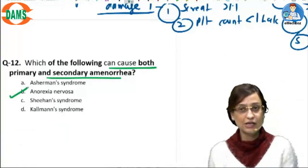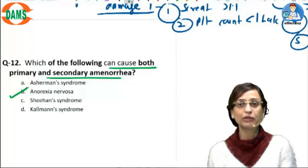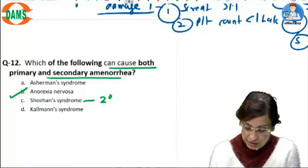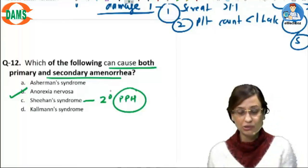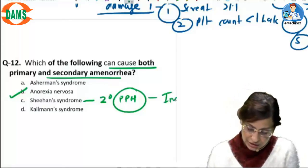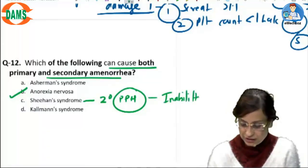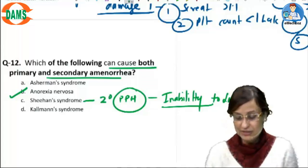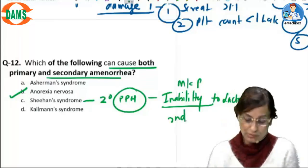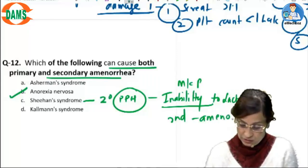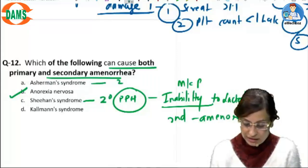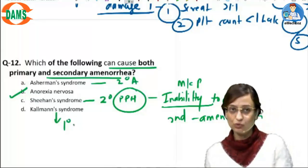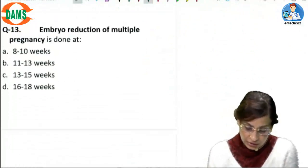Regarding causes of both primary and secondary amenorrhea — the answer is anorexia nervosa. Sheehan's syndrome usually causes secondary amenorrhea; the classic history is a patient with massive postpartum hemorrhage presenting with failure to lactate, which is the most common presentation, followed by amenorrhea as the second most common. Asherman's syndrome presents with secondary amenorrhea, while Kallmann's syndrome presents with primary amenorrhea.